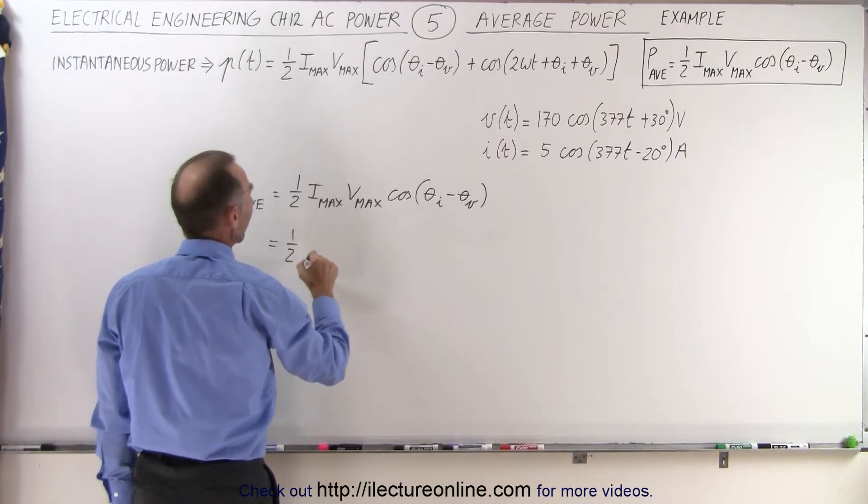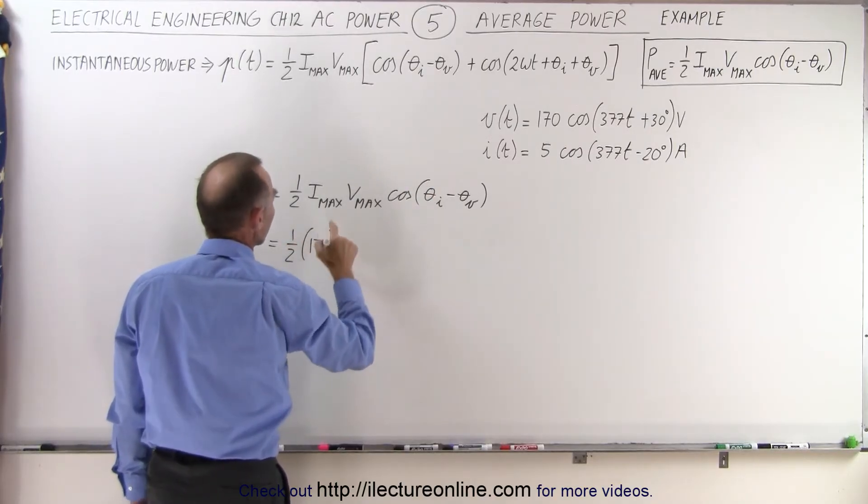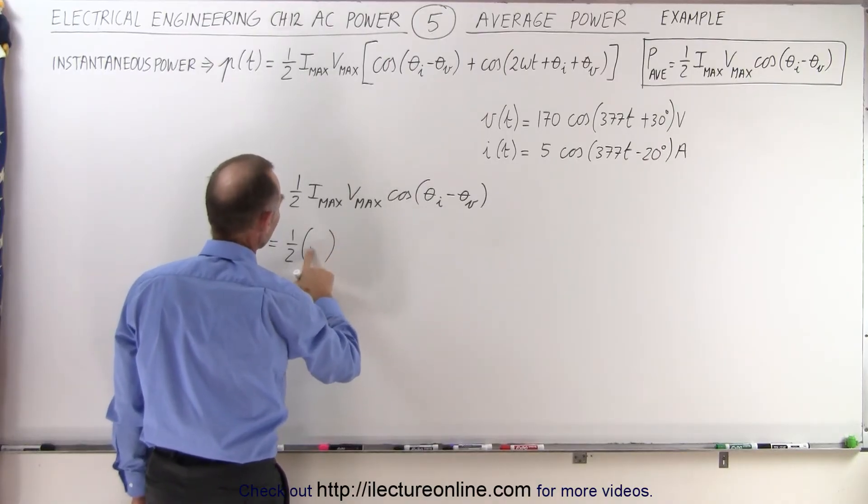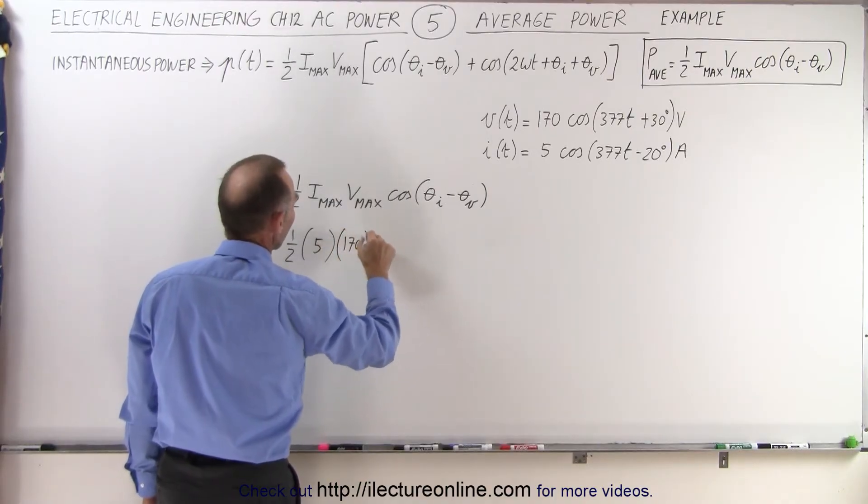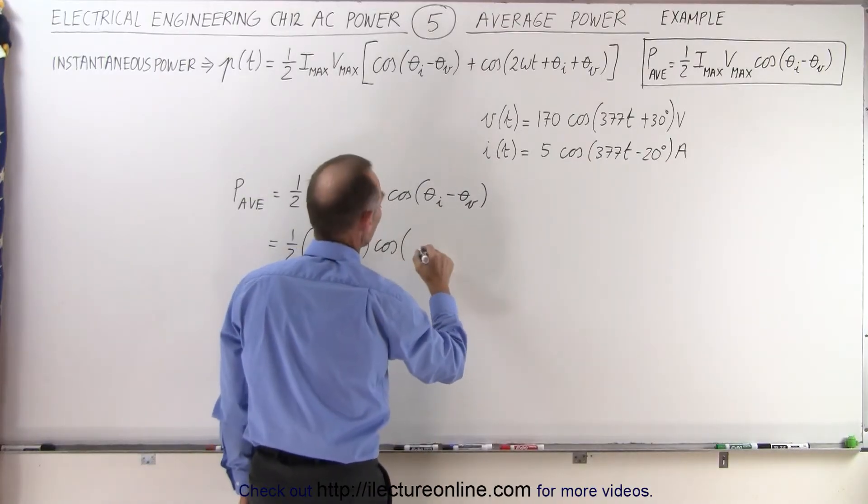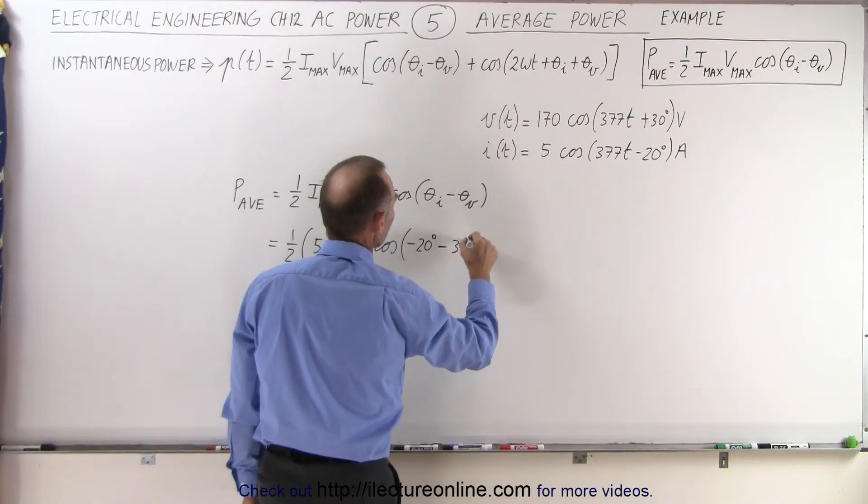This is equal to one half times the maximum voltage which is 170 times the maximum— oh I have the maximum current here, don't I? So let's change that. Maximum current is 5, maximum voltage is 170, and then we get the cosine of the difference between the two phase angles, theta sub i is minus 20 degrees minus 30 degrees.